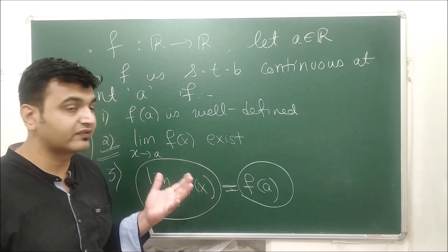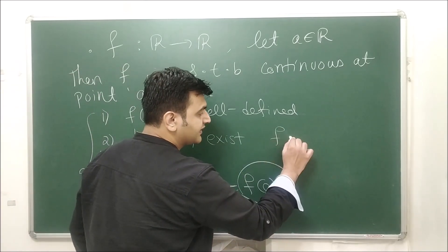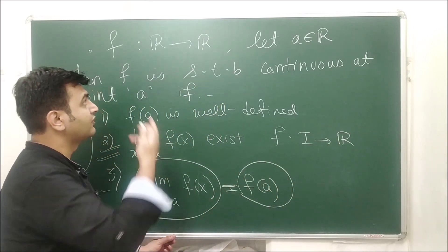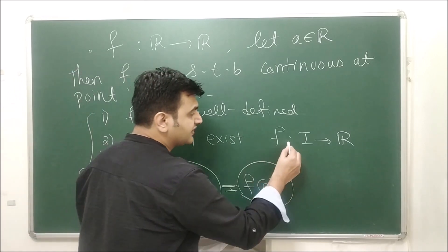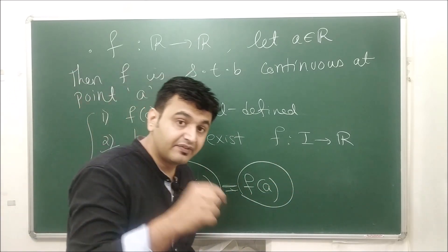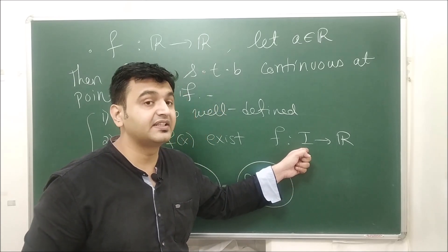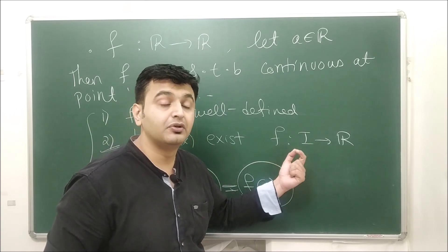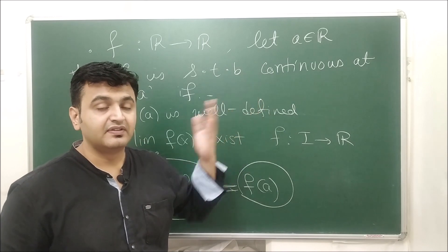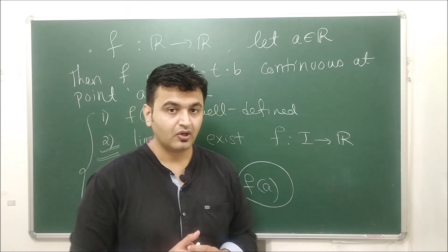This is the notion of continuity at a point. Now if you have a function from an interval I to ℝ, we say the function is continuous over I if it is continuous at each and every point of the interval I. If the function is not continuous at some point, we say the function is discontinuous at that point.